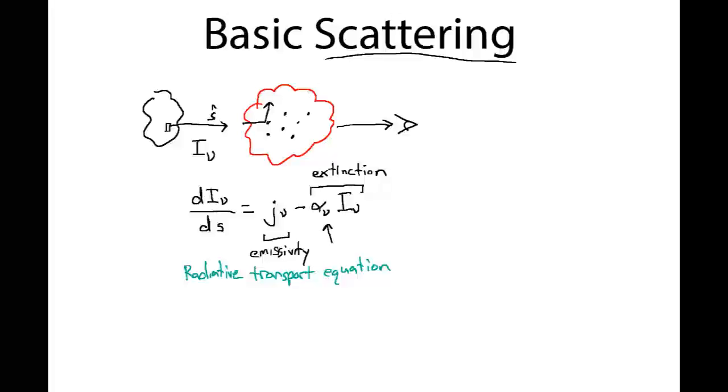Or a scatterer can work by taking light that was out of our line of sight, let's say a photon was coming down through this cloud, and scattering it back into our line of sight this direction. So scattering can do two things. It can remove photons from our line of sight, or it can add photons to our line of sight.